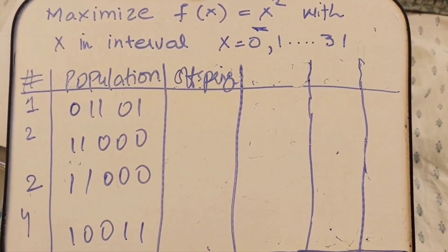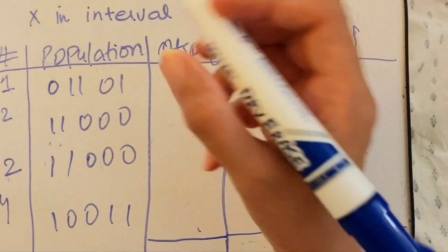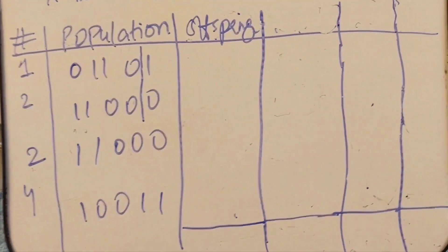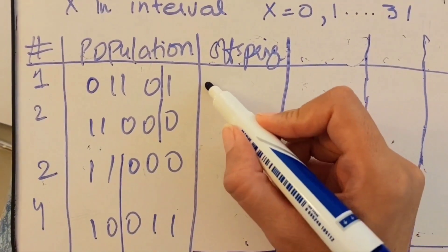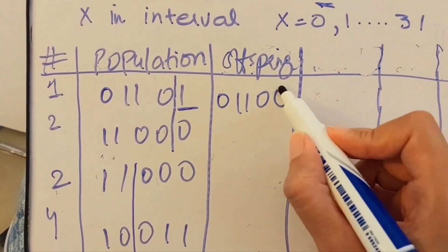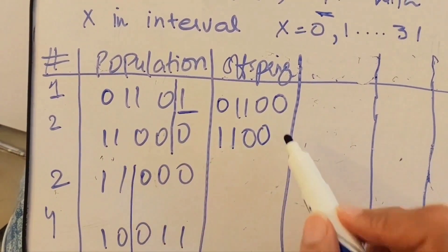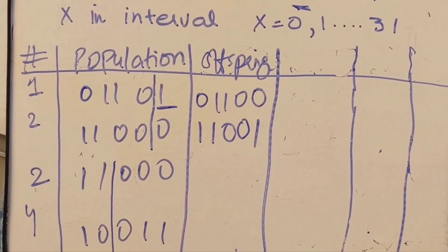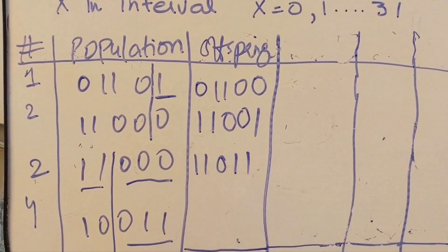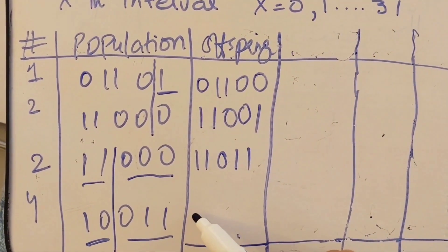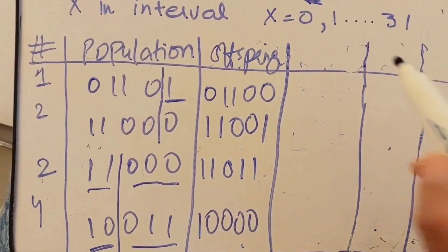Before generating the next offspring, I use the crossover technique. In crossover, I can split at any position. For the first two strings I choose to crossover at position four, and for the second two strings at a different position. For the first offspring: I keep 0110 and append 0 from the second string; for the second: I keep 11000 and append 1. For the third and fourth offspring I similarly swap the tail portions, producing new chromosome combinations.